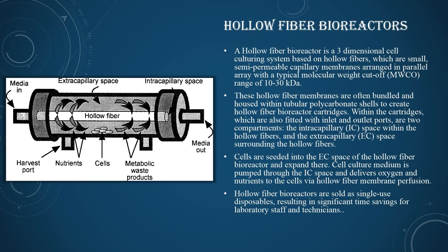The hollow fibers are bundled within tubular polycarbonate shells to create the hollow fiber bioreactor cartridge. Cells are seeded into the extracapillary (EC) space of the hollow fiber bioreactor. Cell culture medium is pumped through the intracapillary (IC) spaces, delivering oxygen and nutrients to the cells via the hollow fiber membrane. Hollow fiber bioreactors are sold as single-use, resulting in significant time savings for laboratory staff and technicians.